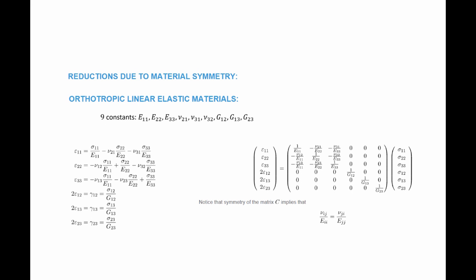We can choose 9 physical constants to describe the stress-strain relationship in orthotropic linear elastic materials. For example, epsilon_11 equals sigma_11 over Young's modulus E_11, minus Poisson's ratio nu_21 times sigma_22 over E_22, minus Poisson's ratio nu_31 times sigma_33 over E_33, and so on. The engineering shear strain gamma_12 equals sigma_12 divided by shear modulus G_12. Accounting for the symmetry of the stress matrix, you find there are 9 independent unknowns, so 9 constants fully define the relationship.